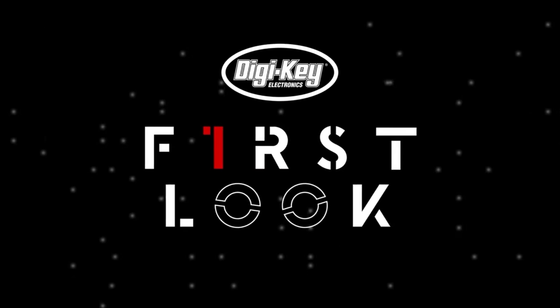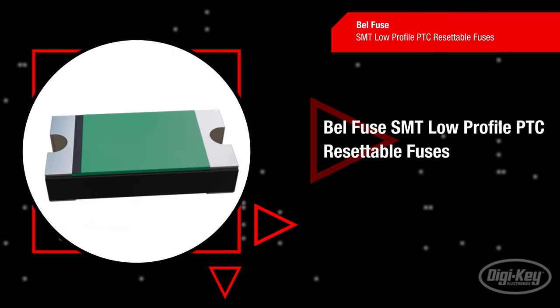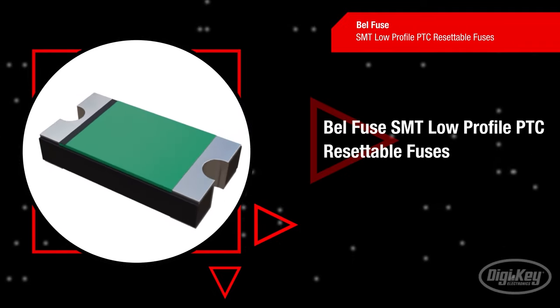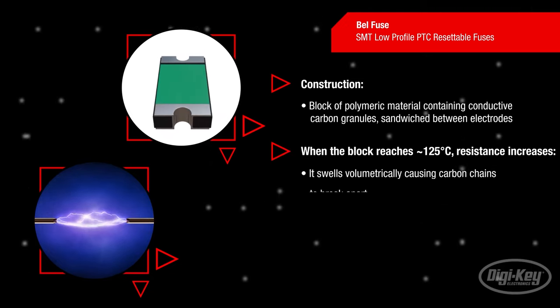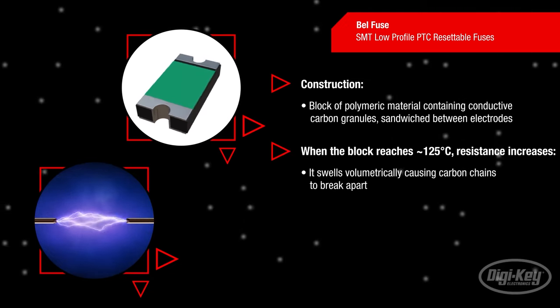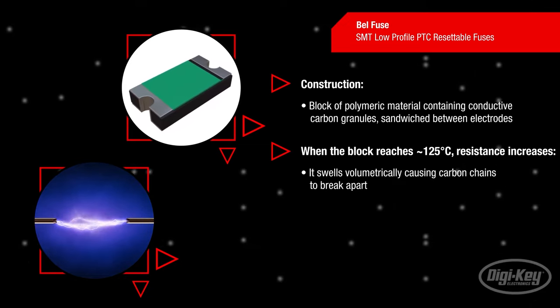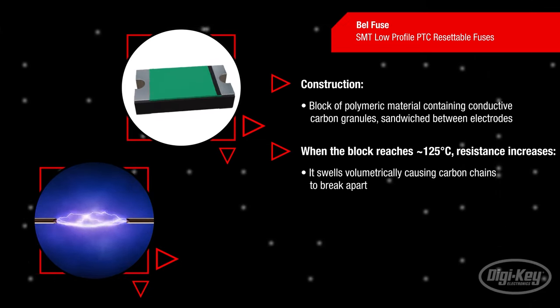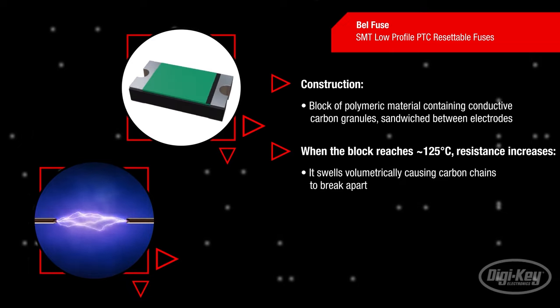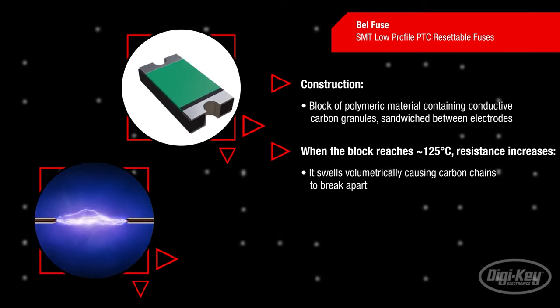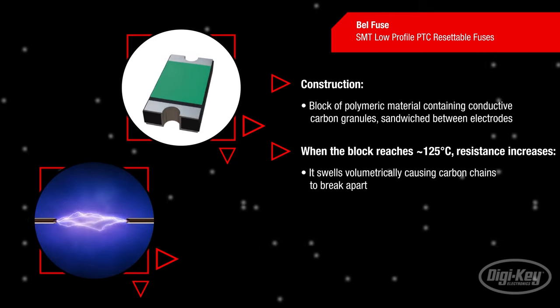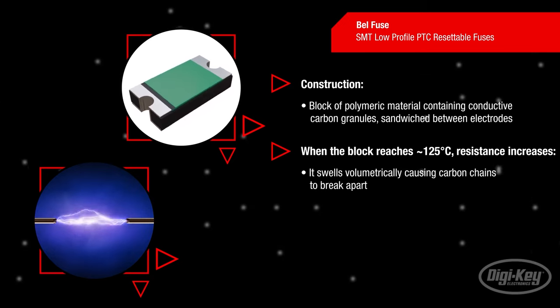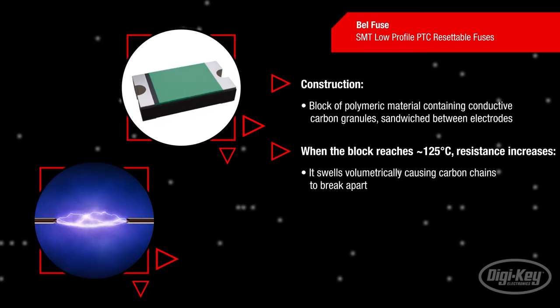For this week's Digikey Spotlight, we've got a video in their First Look series about low profile PTC resettable fuses. Just like regular fuses, these can be used to protect your circuits from conditions like overheating and short circuits. When the component gets too hot from any of these conditions, the carbon matrix that's responsible for passing the current breaks, opening the circuit. But when the fuse returns to room temperature, the carbon matrix reforms and current can flow through it again. It's a cool trick and might be a good feature for a project you're working on.